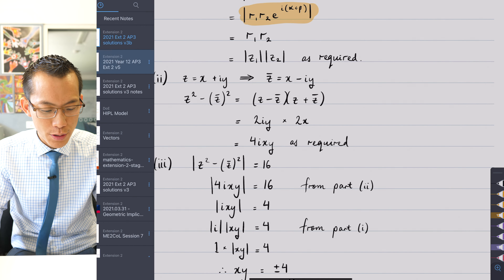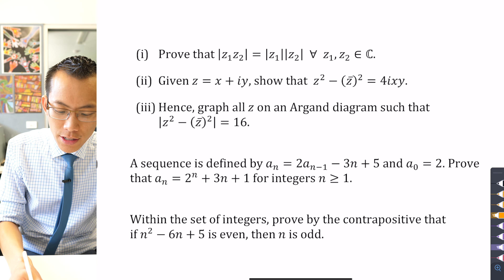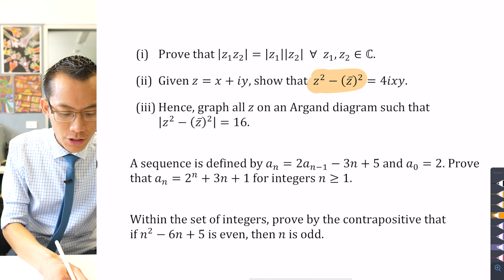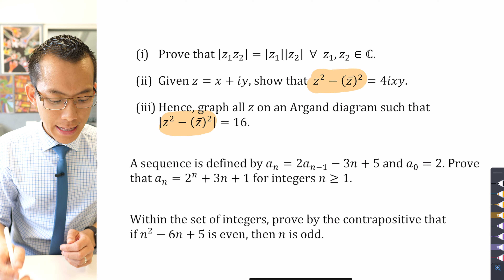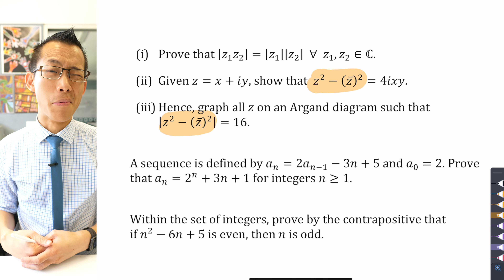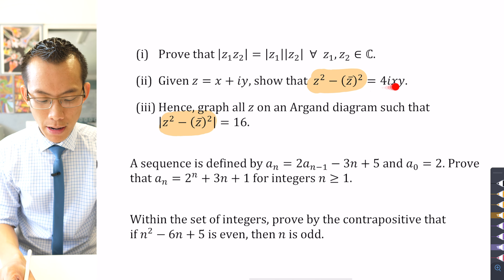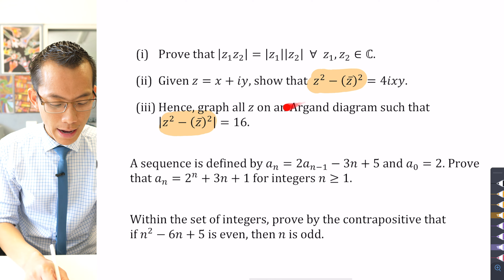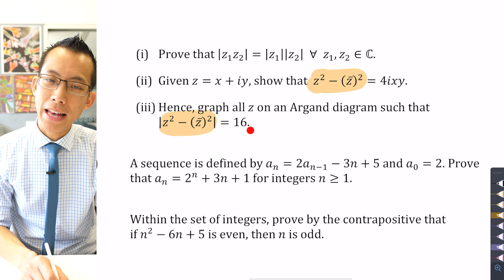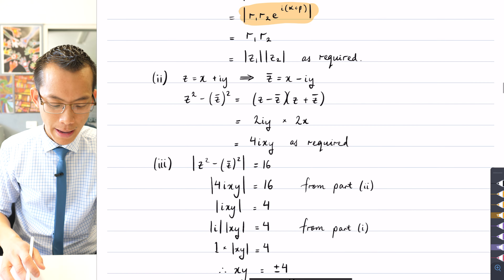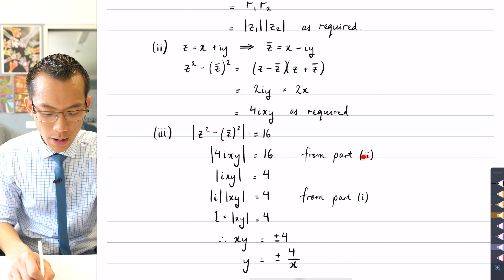In part 3, I hope you saw how to use parts 1 and 2. Part 2 is more obvious to use: on the left-hand side of what we're asked to graph, there's that same z squared minus z-bar squared that we proved a result for in part 2. This clearly implies substituting the result for ixy from part 2 will make things easier — and indeed it does.